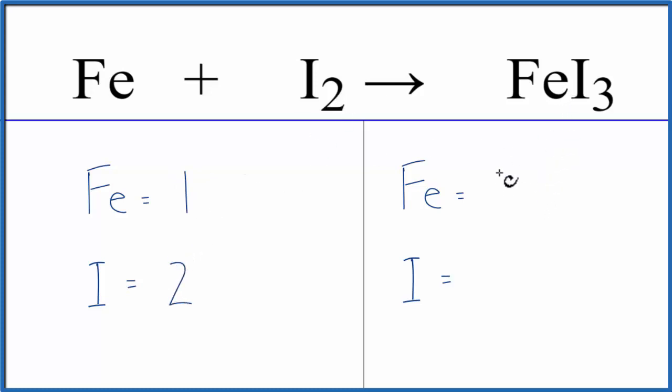On the product side of the equation, one iron and then three iodide atoms. Whenever I have an odd number of atoms, I like to get that to an even number because that'll make it much easier to balance these iodines over here. So let's multiply the FeI3 by a coefficient of 2.